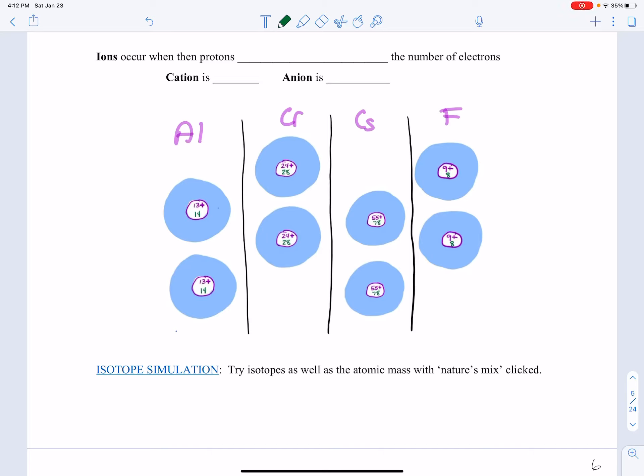Now we're going to look at ions. Ions occur when the protons do not equal the number of electrons. Little hint, this means that the charge is going to not be neutral.